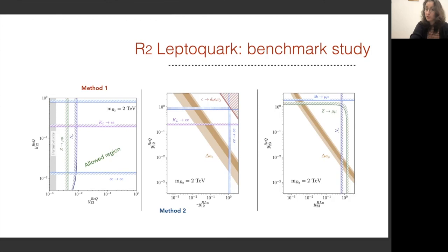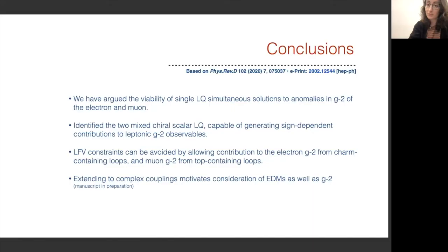For the R2 leptoquark, it's very similar. There are just slightly different constraints and this has to do with the underlying SU structure in particular of the leptoquark Lagrangian. Again there's an allowed region in the center and again there are significant non-zero regions that are permitted in both the electron and the muon sector.